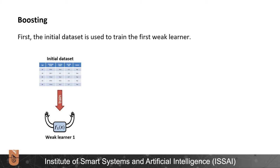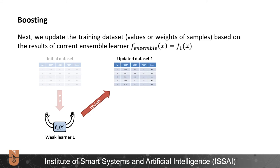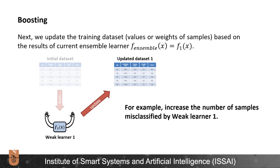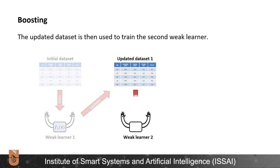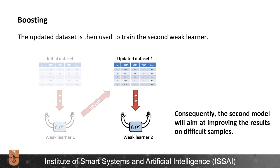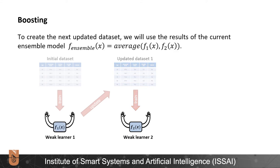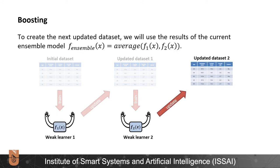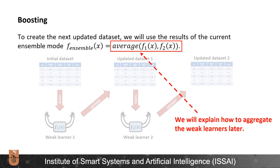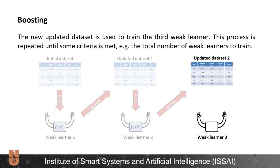First, the initial dataset is used to train the first weak learner. Next, we update the training dataset based on the results of the current weak learner. For example, we can increase the number of samples misclassified by weak learner 1. The updated dataset is then used to train the second weak learner. Consequently, the second model will aim at improving the results on difficult samples. To create the next updated dataset, we will use the results of the current weak learner – we will explain how to aggregate the weak learners later. And the new updated dataset is used to train the third weak learner.